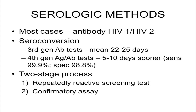Most cases are diagnosed by detecting antibody to HIV-1 or HIV-2 — this is seroconversion. Third generation tests, which many labs still use, have a mean seroconversion time of 22 to 25 days. The newer fourth generation tests, which combine antibody detection with antigen detection, detect infection about 5 to 10 days sooner. Sensitivity is very high and specificity is quite good as well — 99.9% and 98.8% respectively.